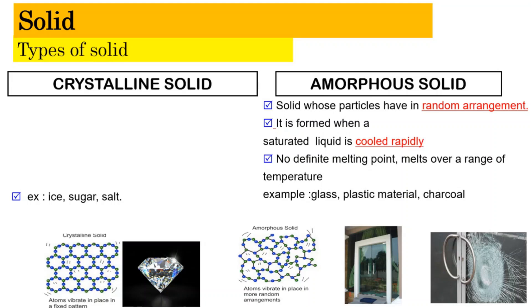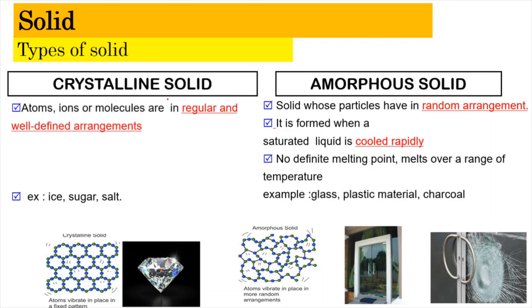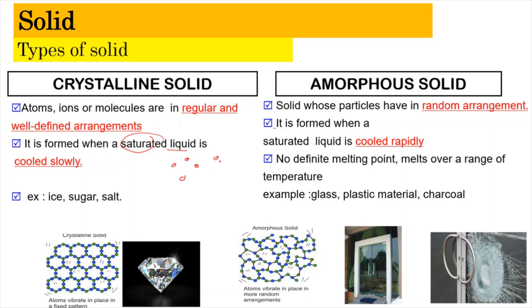There are two types of solids: crystalline and amorphous. In crystalline solids, atoms, ions, or molecules are arranged in a regular, well-defined arrangement, formed when a saturated liquid is cooled very slowly, giving particles enough time to arrange in an orderly manner. Amorphous solids have a random, disoriented arrangement with no regular shape, formed when a saturated liquid is cooled rapidly.